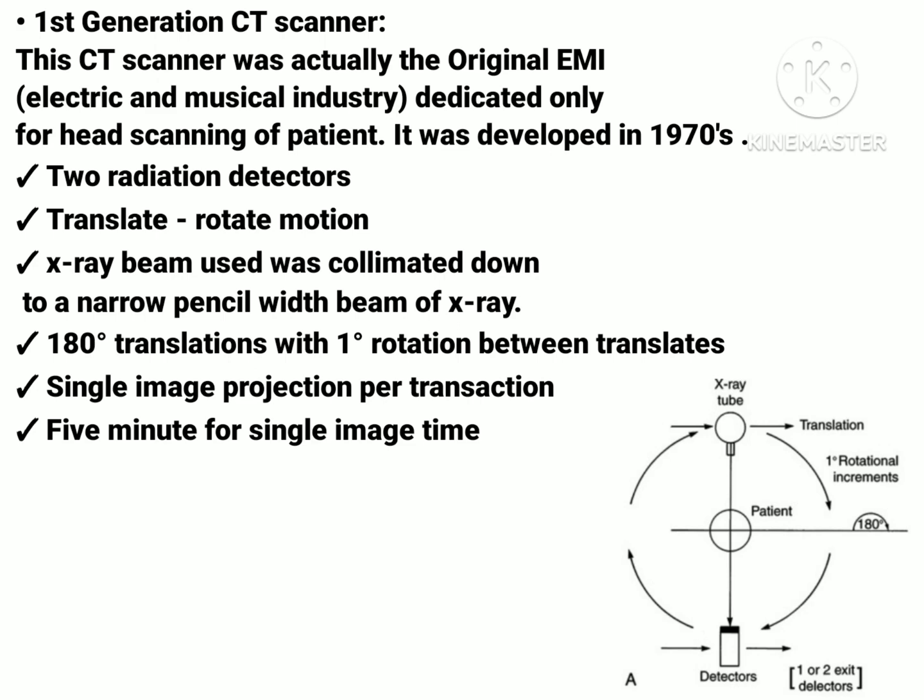Their motion is called translate-rotate motion. The X-ray beam is collimated down to a narrow pencil-width beam of X-rays. The size of the beam was 3 mm within the plane of slice and 1.3 mm width perpendicular to the slice. The rotation is 180 degrees translation with one degree rotation between translations. In total we can get five images in the CT scanner, and each image takes five minutes, so for five images it will be 25 to 30 minutes.